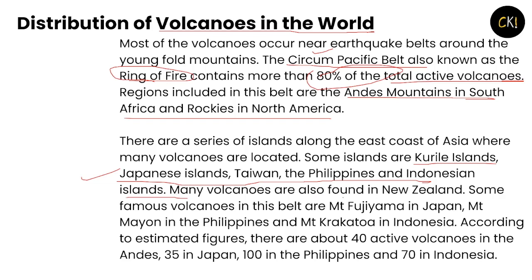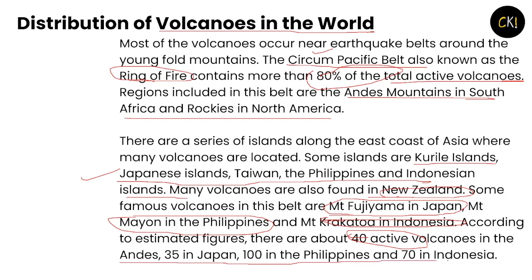Many volcanoes are also found in New Zealand. Famous volcanoes in this belt include Mount Fujiyama in Japan, Mount Mayon in the Philippines, and Mount Krakatoa in Indonesia. According to estimates, there are about 40 active volcanoes in India, 35 in Japan, 100 in the Philippines, and 70 in Indonesia — worth remembering for exams.